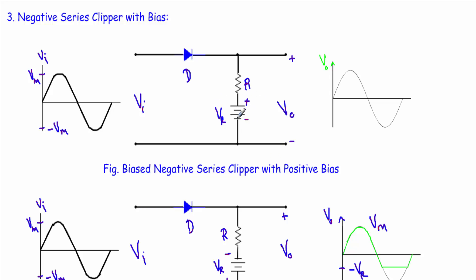When we have a bias voltage in the circuit, in the first step we have to identify the region in which the diode will be ON or in forward state, and the region in which the diode will be OFF or in reverse bias. During the positive cycle, this terminal will be positive and this terminal will be negative. The positive terminal of the input voltage is connected with the P side of the diode and the negative terminal is connected with the N side. So the input voltage during the positive half cycle will try to drive the diode in forward bias. However, the bias voltage has its positive terminal connected with the N side of the diode and the negative terminal connected with the P side — meaning this bias voltage is trying to drive the diode in reverse bias.